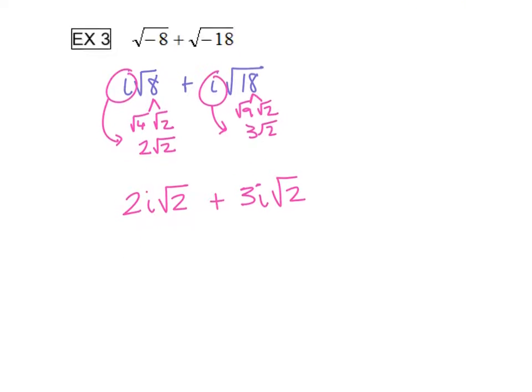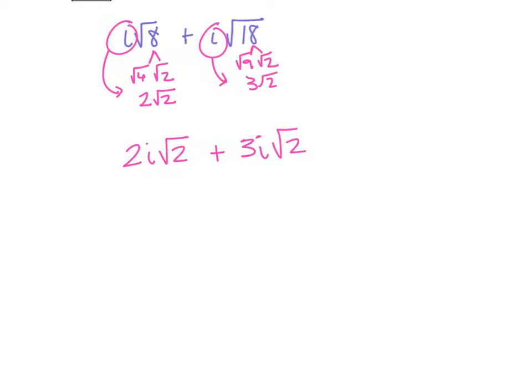Alright, so can we combine these? Well, it's a square root of 2 and a square root of 2, and then it's a 2i plus a 3i. So we're going to go ahead and combine these i's. If you have 2 i's and you add 3 i's to it, you get 5i, and that square root of 2 stays the same.